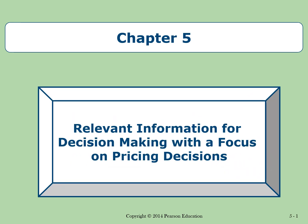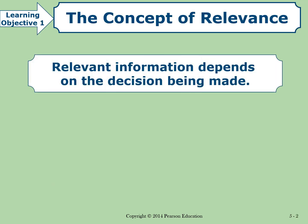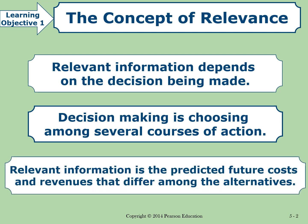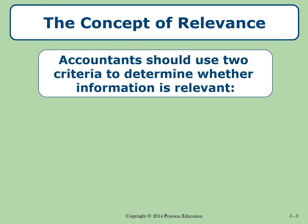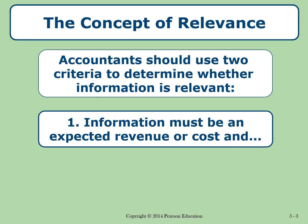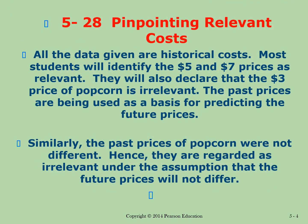We are going to discuss Chapter 5, which is about decision making. First, we have to discuss the relevant information that's going to be used in our modeling for decision making. We have two main items related to the concept of relevance: first, it means it's related to the future; and second, it means it will provide a difference between or among alternatives. Any cost that happened in the past as a fixed cost is going to be irrelevant and not used in our model.